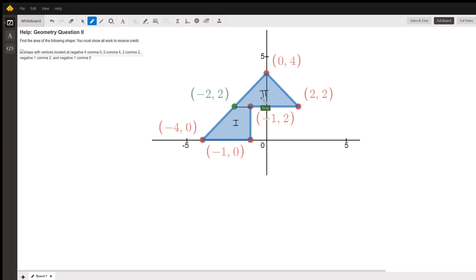So region two is a triangle. I'm not convinced that it's equilateral, but it doesn't matter. The base is the length of this segment right here from (-2, 2) over to (2, 2).